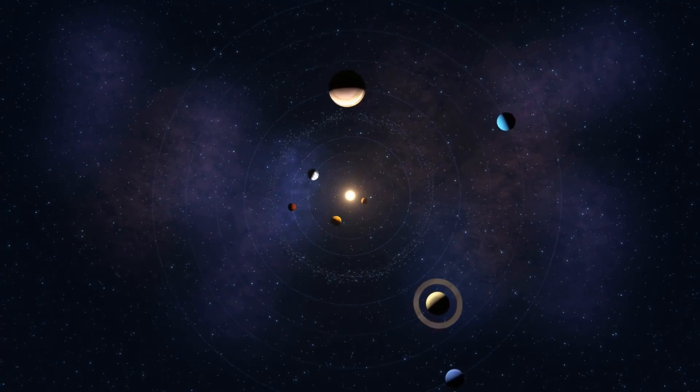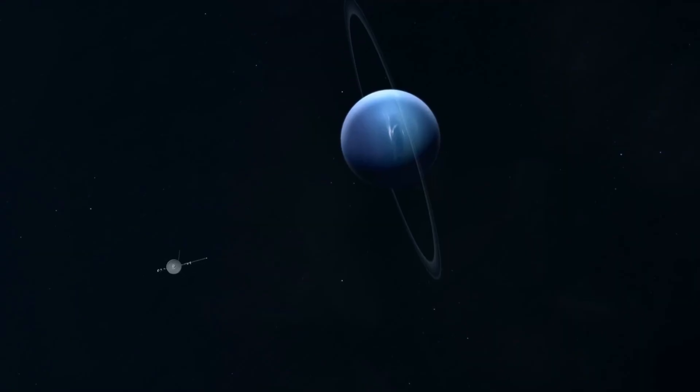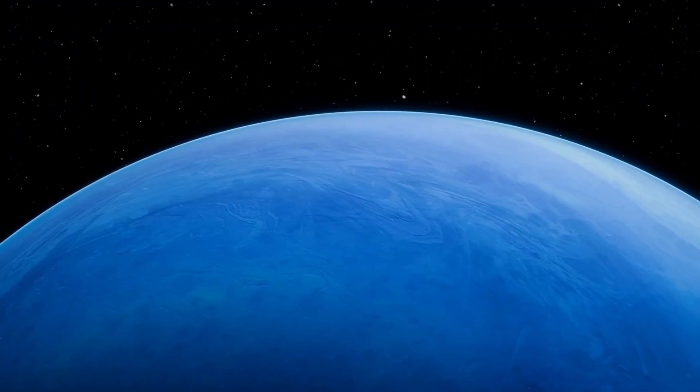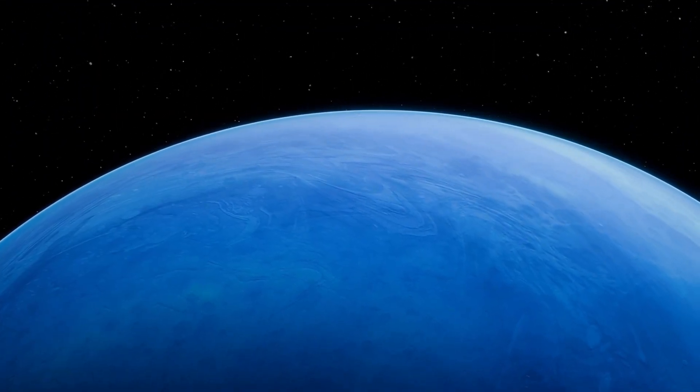Until 1989, when Voyager 2 flew by and offered our first real glimpse. What it saw was a planet alive with activity: roaring supersonic winds, transient storms, faint ring arcs, and a striking deep azure hue caused by trace methane in its upper atmosphere.